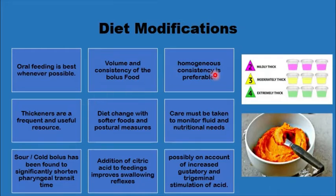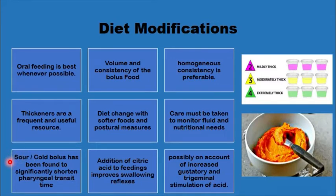The addition of various thickeners, guided by results of video endoscopy or video fluoroscopy, will show what volume, consistency, or rate of administration is best handled by the patient. The diet can also be modified by adding sour or cold boluses, which significantly shorten pharyngeal transit time. Addition of citric acid, for example, also improves the swallowing reflex, presumably by maximizing the sensory input of the swallowing reflex.